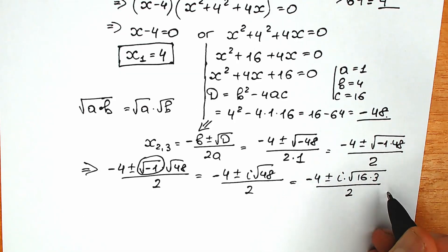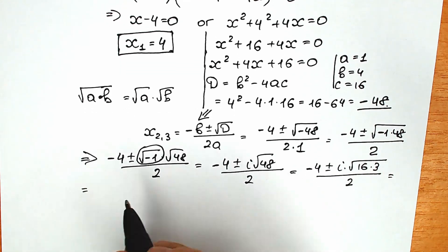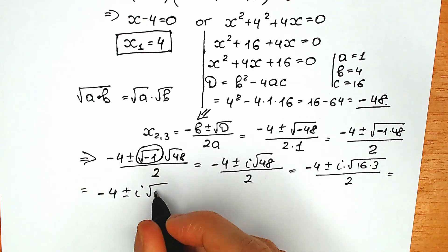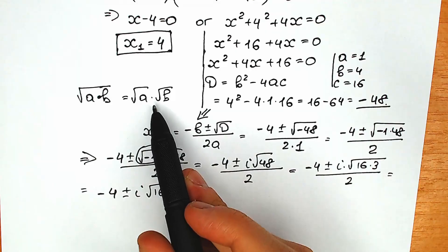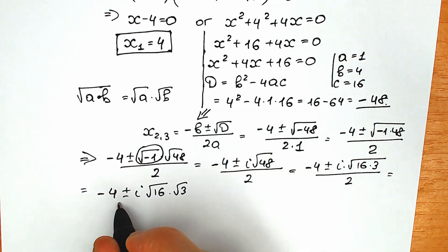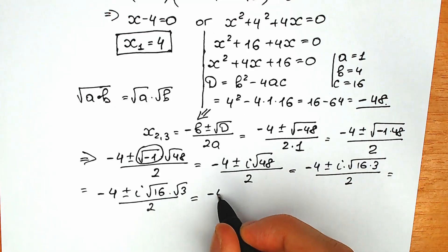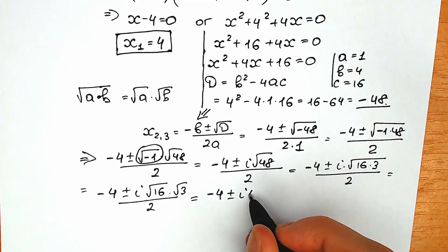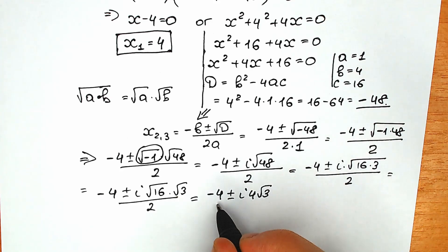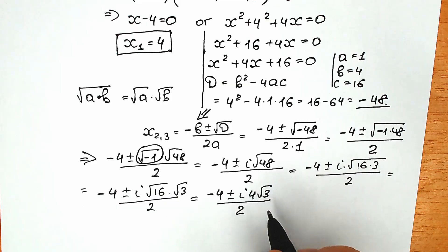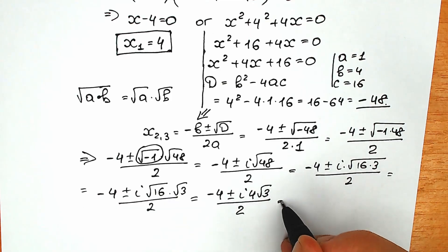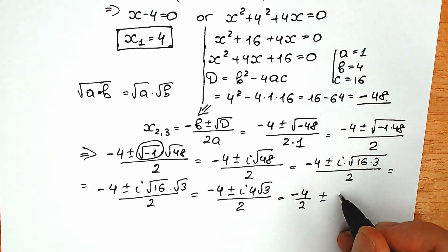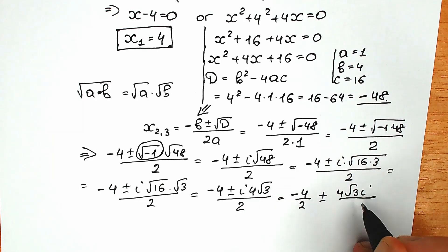So we have minus 4 plus-or-minus i times square root of 16 times 3, all divided by 2. Splitting the square root: square root of 16 times square root of 3, and since square root of 16 equals 4, we get minus 4 plus-or-minus 4i times square root of 3, all over 2. Now let's divide the numerator by 2.